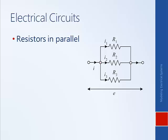We can imagine electrons flowing through the circuit where each electron can choose a different path — some flow through the first resistor, some through the second, and some through the third. Using the fact that current is conserved, however much current flows into a node equals however much flows out: the current in equals I1 plus I2 plus I3.